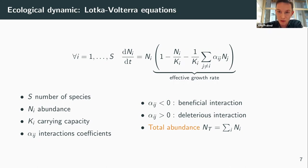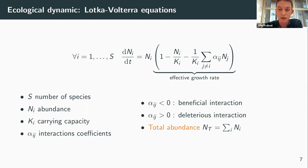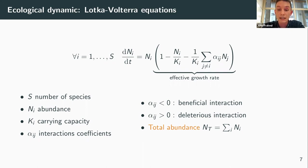In this notation, alpha_ij negative accounts for beneficial interaction, whereas alpha_ij positive accounts for deleterious interaction. The total abundance — the quantity we want to select — is denoted N(t) and is simply the sum over i of N_i.